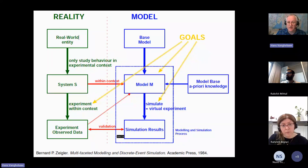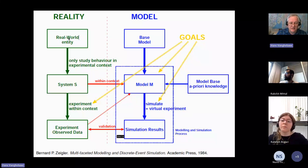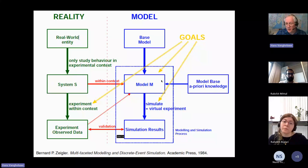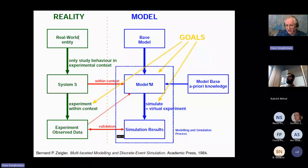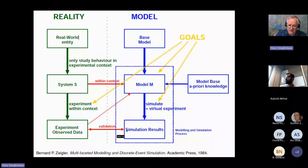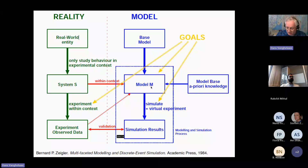Let's not forget that what we're doing is modeling. We're building a model of a real-world entity in a certain context, where we're interested in certain properties of interest and others we are not. We replace real-world experiments by virtual simulation experiments. We want this model to be valid, which means the derived properties of interest are close enough to reality.